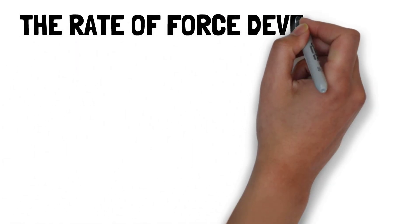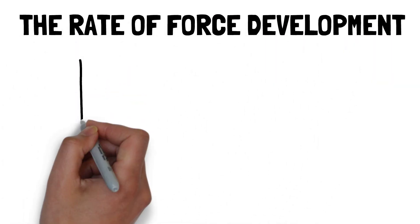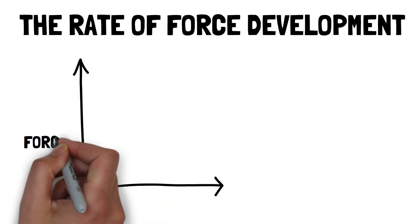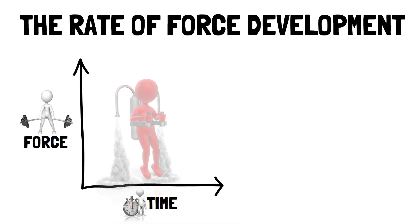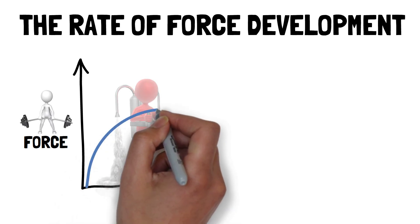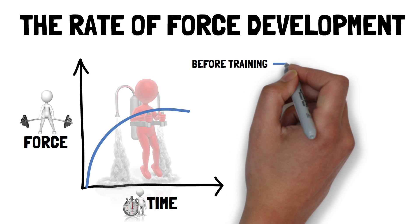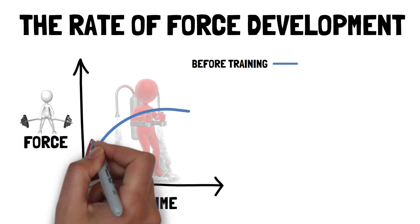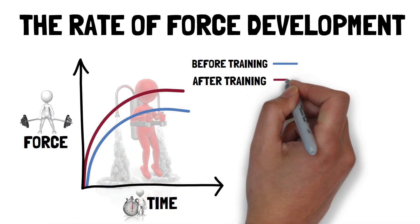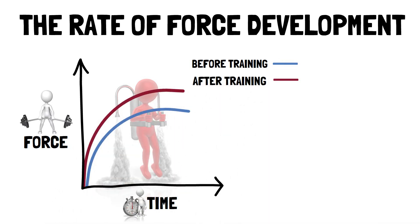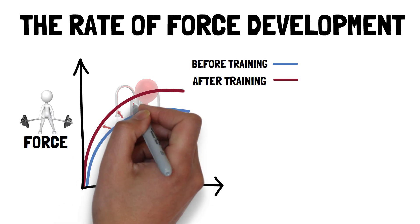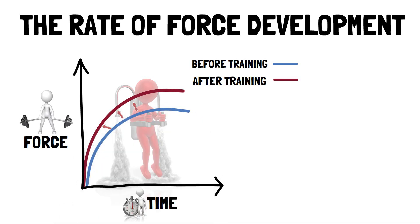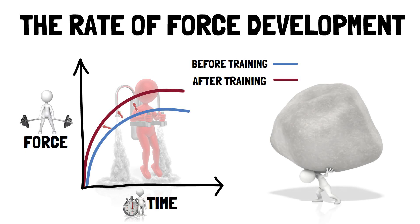The rate of force development is simply how fast an athlete can develop force, which is sometimes referred to as explosive strength. Increasing the rate of force development, whilst reducing the time in which peak rate of force development occurs, will result in a left and upward shift in the force-time curve, meaning greater forces can be produced in a shorter period of time.